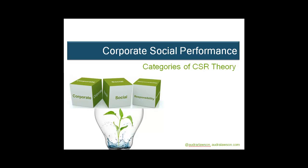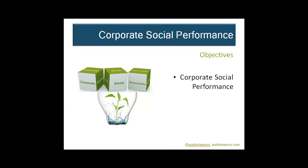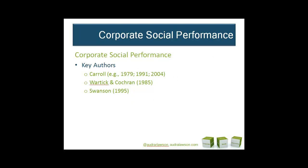In our last lecture, we discussed theory and introduced four classifications of CSR theories. In this podcast, we'll focus on the group of CSR theories emphasizing corporate social performance. This perspective emphasizes the kinds of socially responsible behaviors and motivations for enacting those behaviors. It mixes what's required and socially appropriate with what's socially desirable. Key authors writing about this perspective include Carroll, Wartick and Cochran, and Swanson.